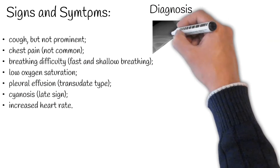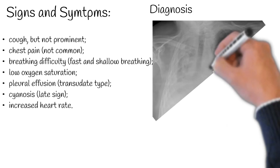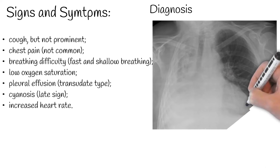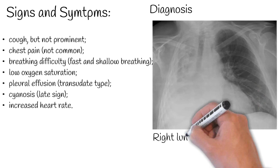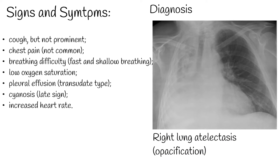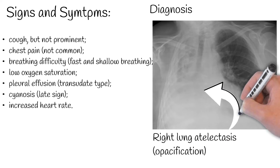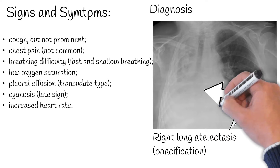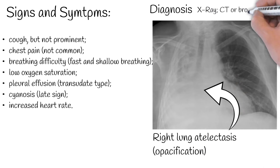For diagnosis, clinically significant atelectasis is generally visible on chest X-ray. Findings can include lung opacification and/or loss of lung volume. Chest CT or bronchoscopy may also be used if atelectasis is not clinically apparent.